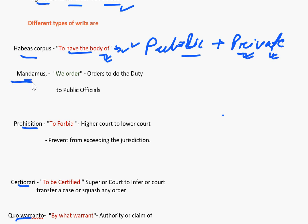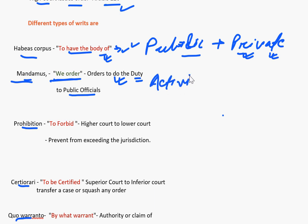The second writ is Mandamus, which means 'we order.' It is an order issued by the court against public officials to do their duty. However, when the nature of the duty is discretionary, it cannot be issued. So it orders activity — when a public official fails or refuses to perform their duty, this order is issued.